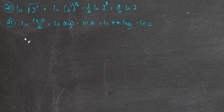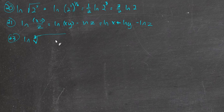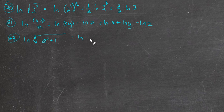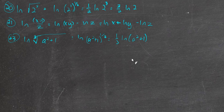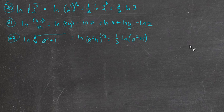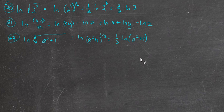For number 23, the natural log of the third root of a squared plus 1: we write this as the natural log of (a² + 1) to the one-third power, then make the one-third a coefficient — one-third times the natural log of (a² + 1). It's important to know you're done here. You might want to expand this into natural log of a squared plus natural log of 1, but there's no property that allows that — that property only applies to products, not sums.